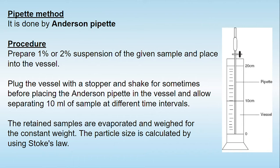Particle size analysis by sedimentation is carried out using an instrument known as the Anderson pipette. First, we prepare a suspension of the given solution and place it into the vessel. After placing it, we plug the vessel with a stopper, allow it to settle for some time, and then insert the Anderson pipette into the vessel.